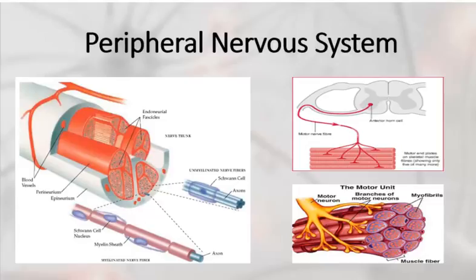Each muscle fiber receives only innervation from one motor unit. In health and disease, that may be a different story, and there may be a variable ratio between each motor unit and the number of muscle fibers that it innervates, but it averages at around 150.